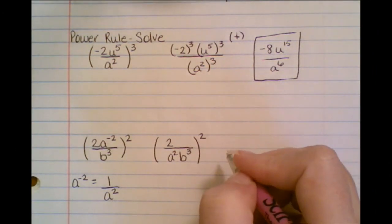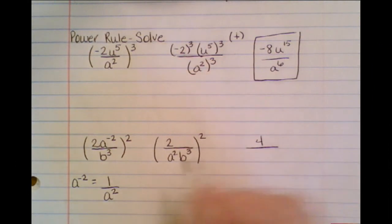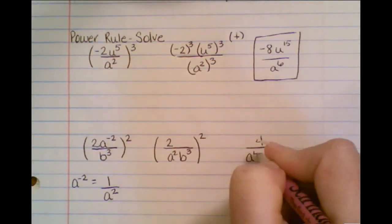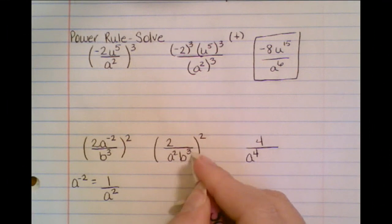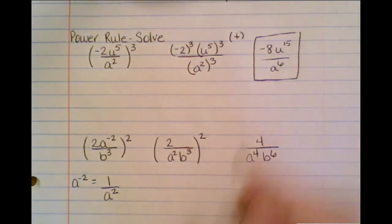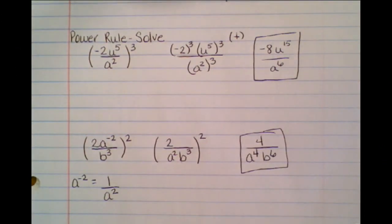So I'm going to try to do it without the steps first. So 2 squared is 4. 2 times 2 is 4, so I get a to the 4th. b, 3 times 2 is 6, b to the 6th. And this will be your final answer because everything has positive exponents.